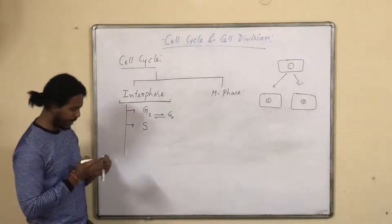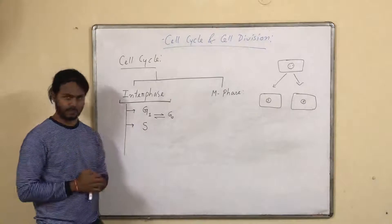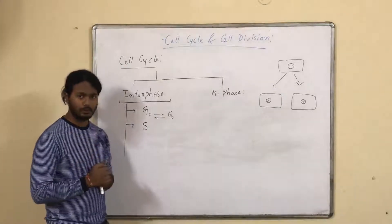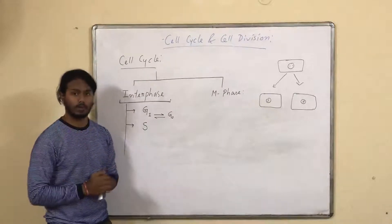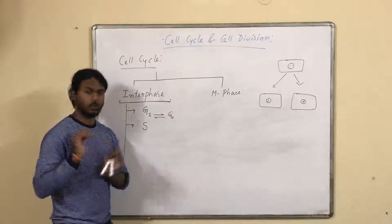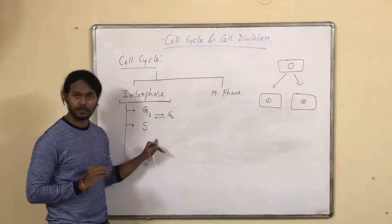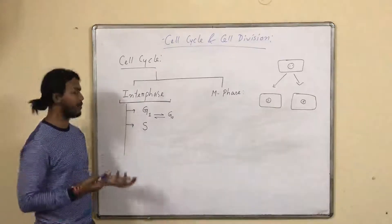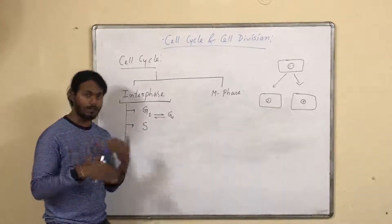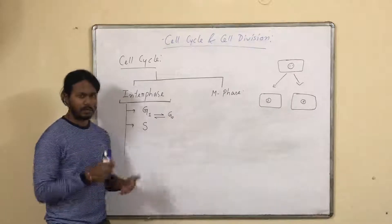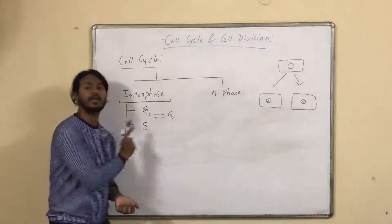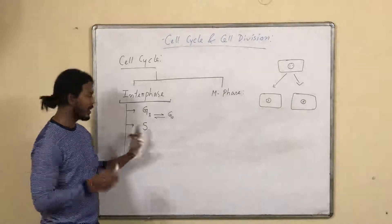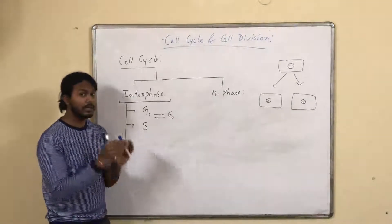The S phase stands for synthesis phase. This is a very crucial stage — it is about DNA, the genetic material. In this phase, DNA replication occurs. The uniformity in DNA amount inside a cell is maintained through DNA replication, which is the duplication of the DNA. So this phase is the synthetic phase where DNA replication takes place.